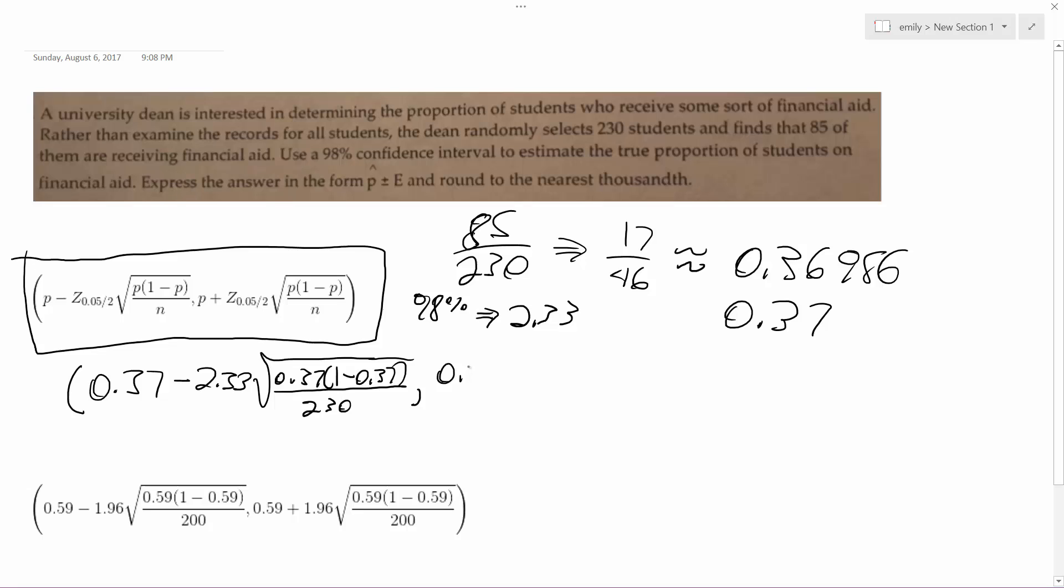And then basically this again except this time it's 0.37 plus 2.33 times the square root of 0.37 times 1 minus 0.37 all over 230.